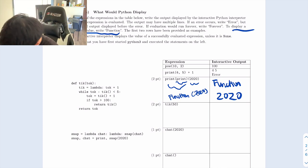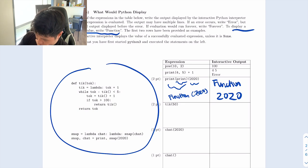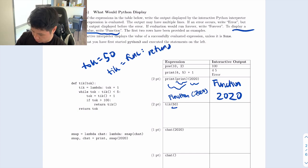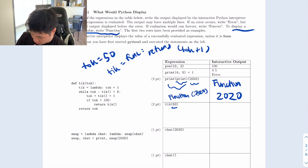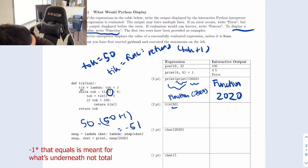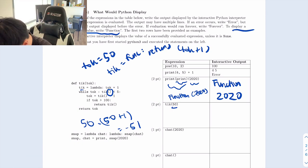Next question: tick(50). Tick is a function defined in tick_talk. Talk equals 50. Tick equals a lambda, which is a function that returns talk plus one. Inside the function, tick is equivalent to a function that returns talk plus one. What is talk? It's 50 in this case. Then we have a while loop: while talk minus tick(talk) is less than five, we execute the body.